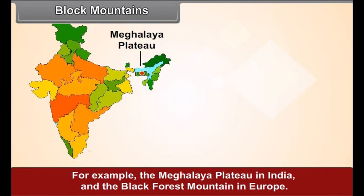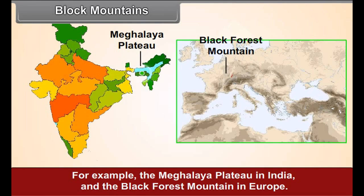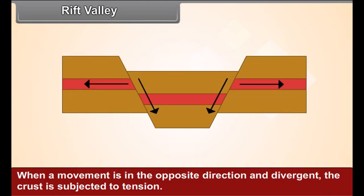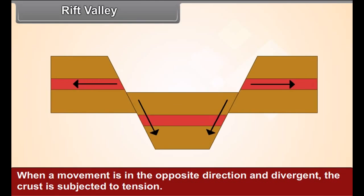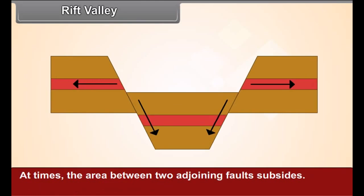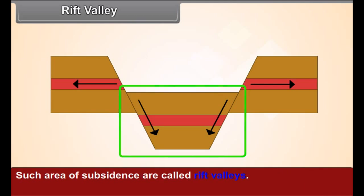Rift Valley. When the movement is in the opposite direction and divergent, the crust is subjected to tension. At times, the area between two adjoining faults subsides. Such areas of subsidence are called rift valleys.